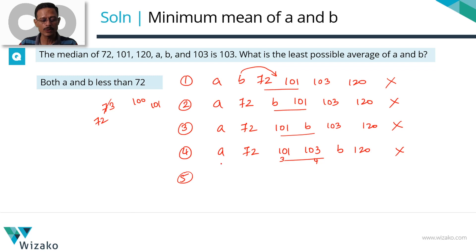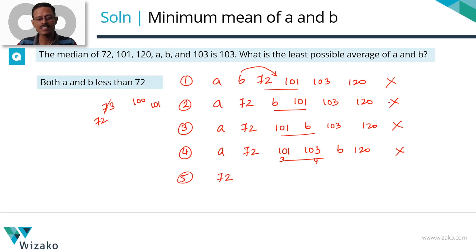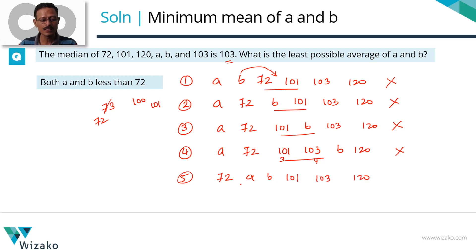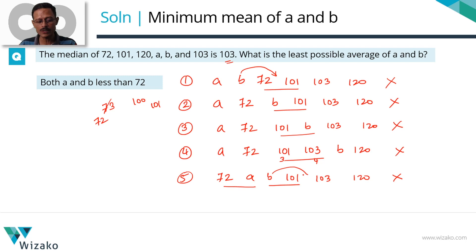Iteration 5: we've realized that keeping a to the left of 72 cannot achieve a median of 103. So 72 is not low enough for a. Now let's push both a and b one step to the right of 72, keeping them less than 101, 103, and 120. The ascending order: 72, a, b, 101, 103, 120. The middle two numbers are b and 101. Since b can be at most 101, the median cannot reach 103.